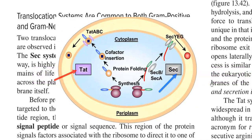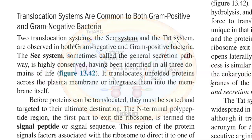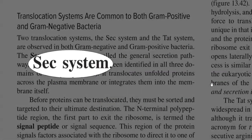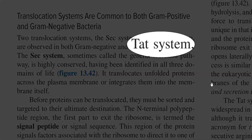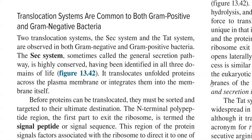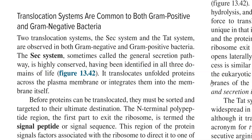Two translocation systems are commonly present. One is the Sec system — Sec refers to secretion of the protein. The other is the TAT system — TAT refers to the twin arginine translocation system, meaning twin arginine amino acids are present in this particular transport system. These two translocation systems are commonly observed in both gram-negative and gram-positive bacteria. The Sec system is sometimes called the general secretory pathway and is highly conserved across different bacteria, identified in all three domains of life.